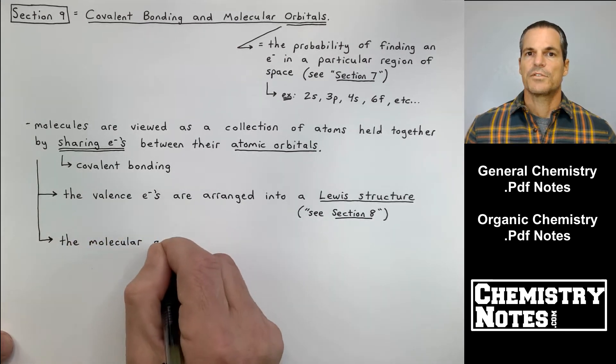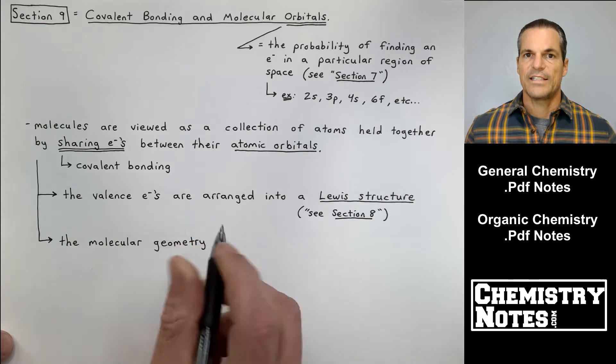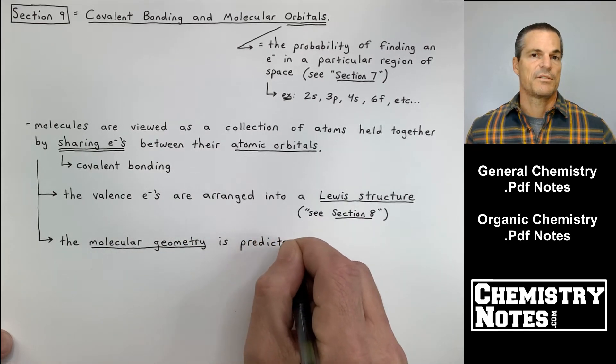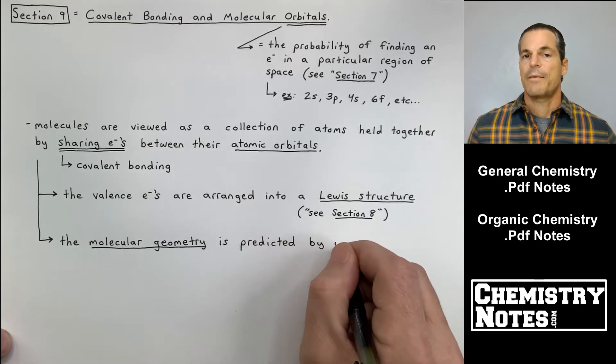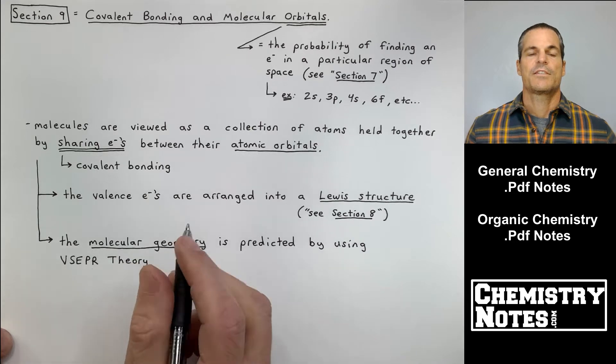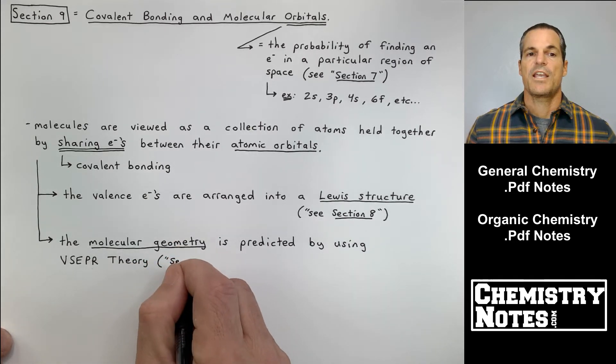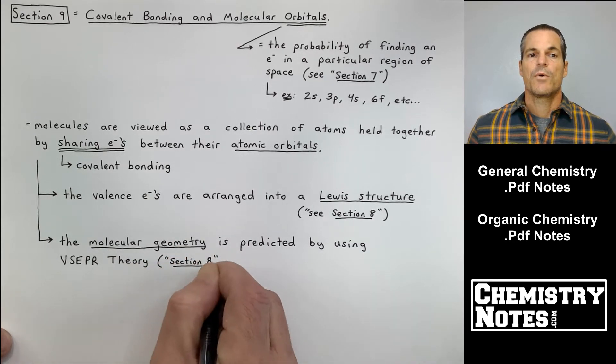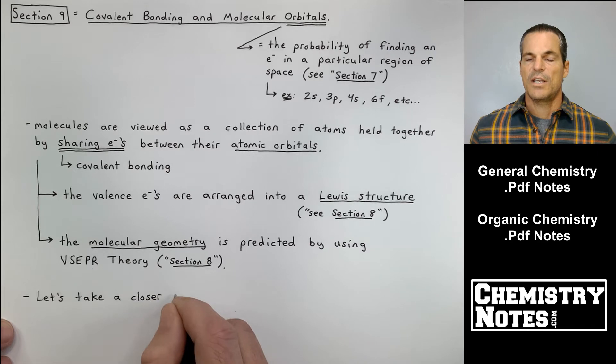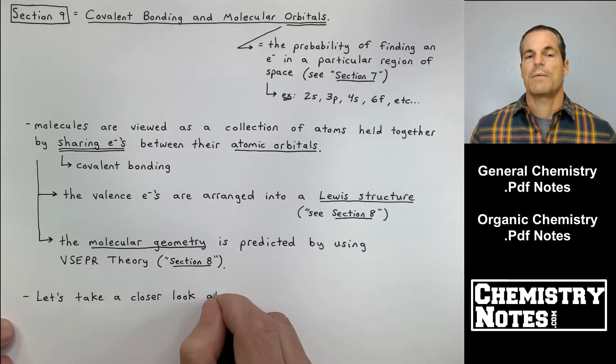After you've got the Lewis structure, you can organize it into its proper shape, which is sometimes in three dimensions. The molecular geometry is predicted using something called VSEPR theory. We talked about that in section 8. That's when things with four attachments can go into three dimensions and we get things like tetrahedral, trigonal pyramidal, etc.